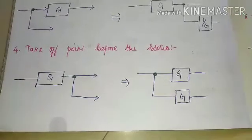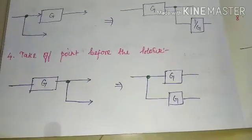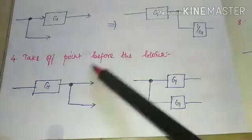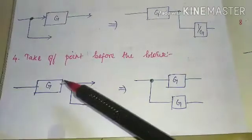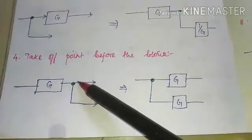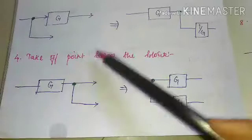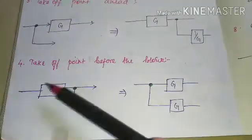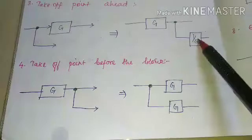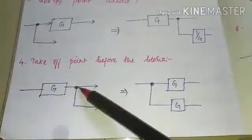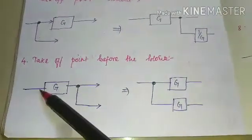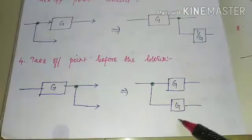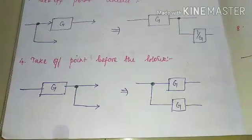The fourth rule is moving the takeoff point before the block. Already the takeoff point is after the block; now we are going to shift it before the block. If you are shifting the point after the block, you divide that block. If you are shifting the point before the block, you multiply that block. So, the same block gain will be multiplied again.